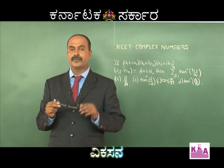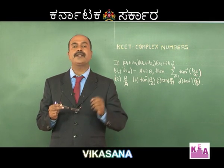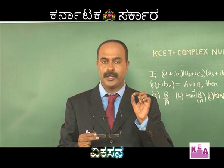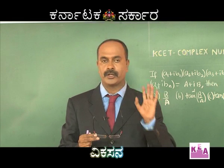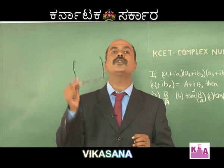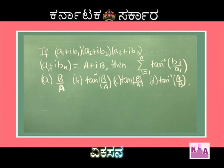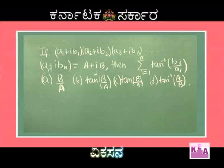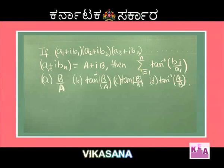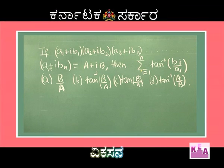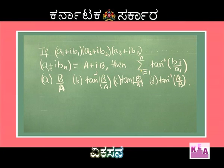Dear students, you must be aware of one basic thing in mathematics, particularly complex numbers: argument of z1 times z2 is equal to argument of z1 plus argument of z2, and this extends to argument of z1 times z2 times z3 and so on. Based on this concept, look at the question. If (a1 + iB1)(a2 + iB2)(a3 + iB3)...(aN + iBN) equals a + iB, then sigma from i=1 to N of tan inverse of bi by ai equals: option A) b/a, option B) tan inverse of b/a, option C) tan(b/a), option D) tan inverse of a/b.